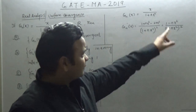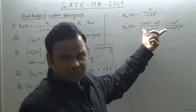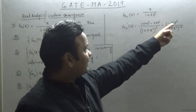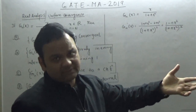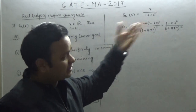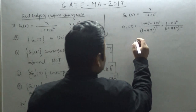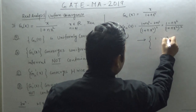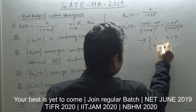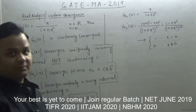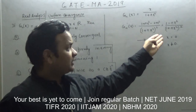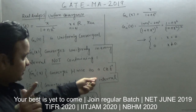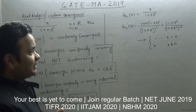When x = 0, g_n'(0) = 1. When x ≠ 0 and we take the limit as n → ∞, the numerator tends to 0 and the denominator grows like n², so the whole expression tends to 0. Therefore g_n' converges pointwise to 1 when x = 0 and 0 when x ≠ 0 — a discontinuous function. So the option saying g_n' converges pointwise to a continuous function is wrong.